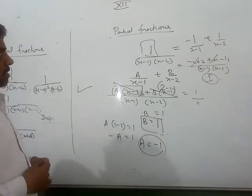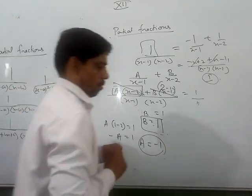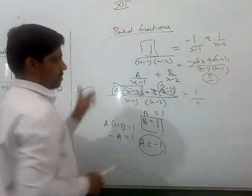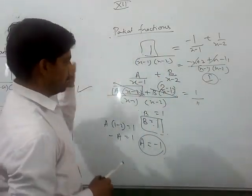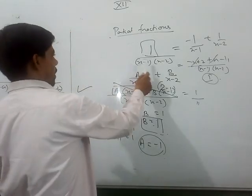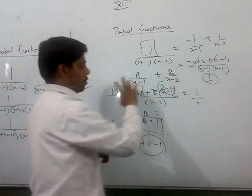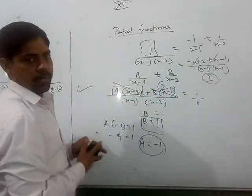So this is the technique of partial fractions. What are the rules if these factors are linear? First rule is degree should be less. Second rule is if you have 3 or 4 or n factors, you will just separate them out with plus signs.